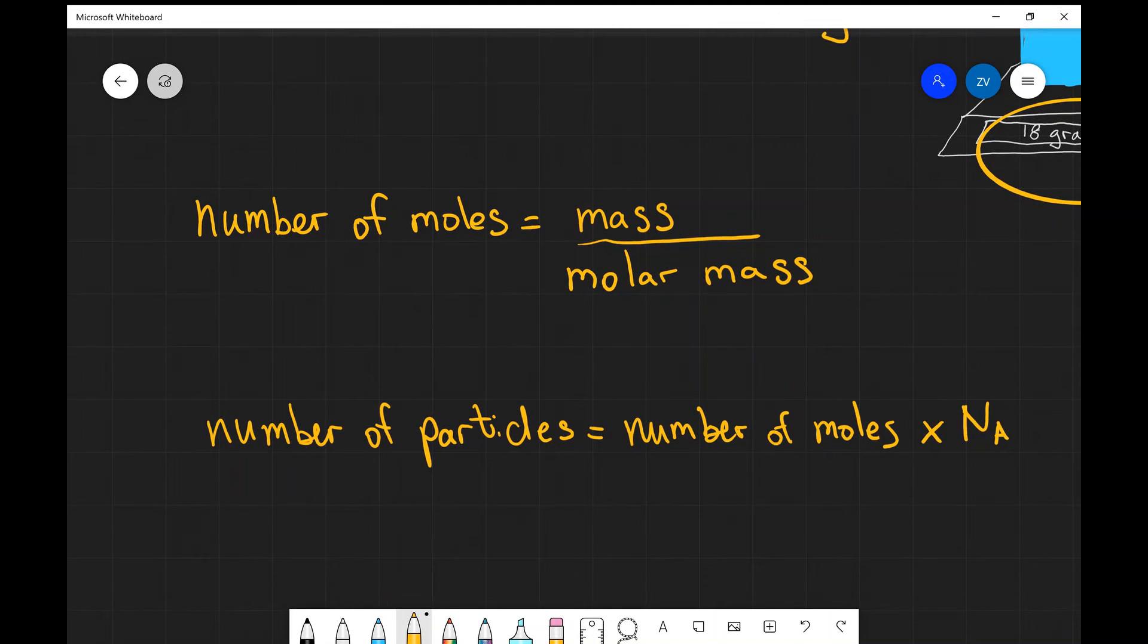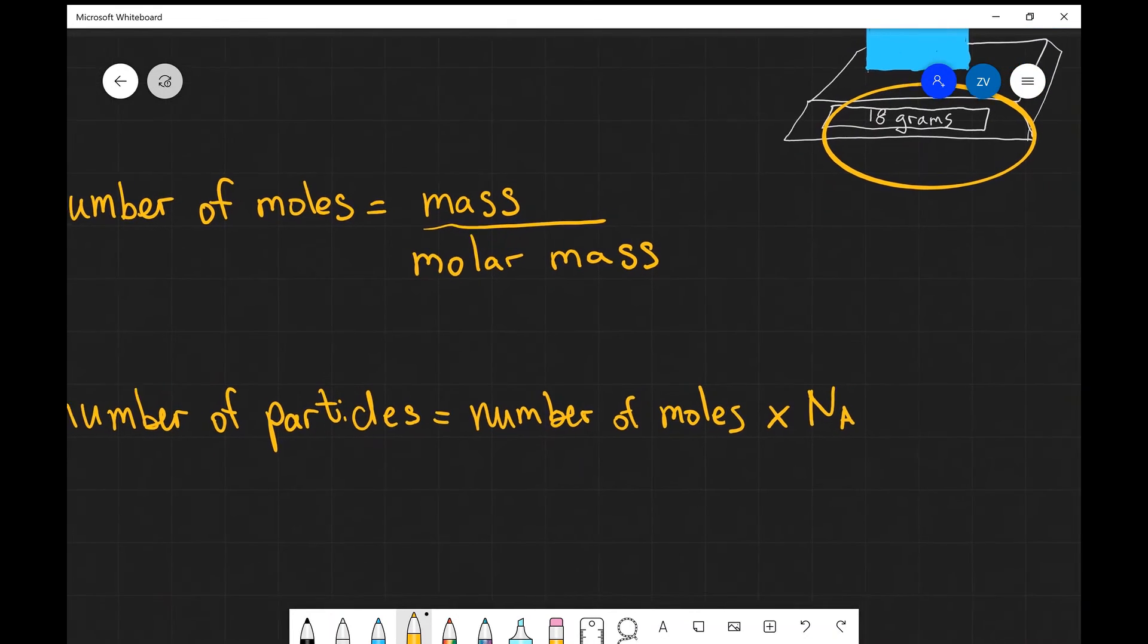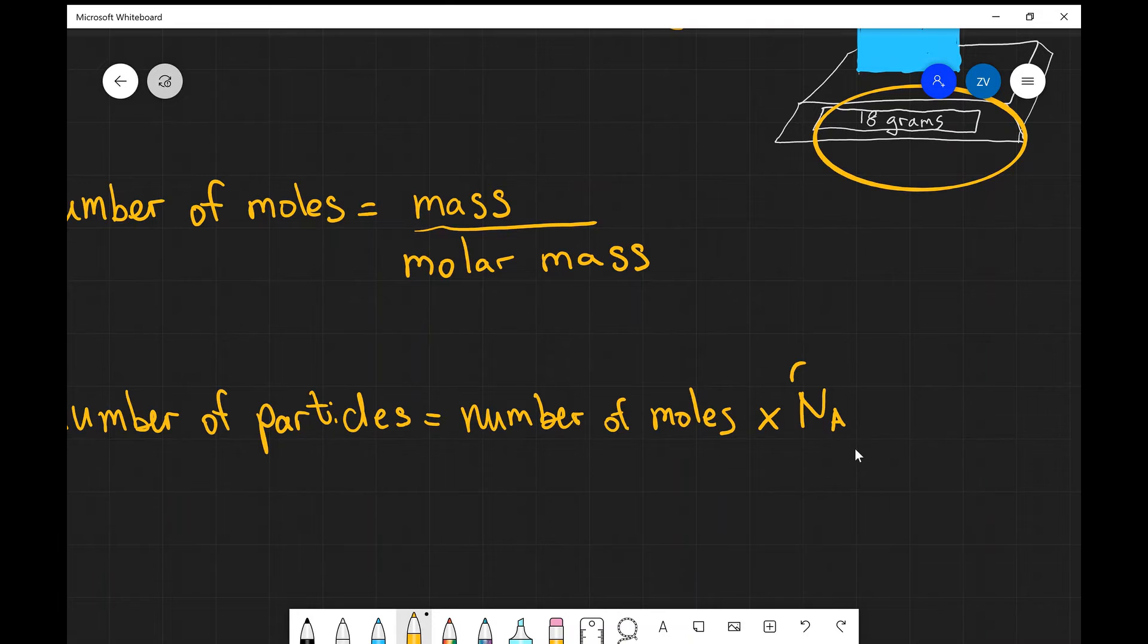Once you have your number of moles, all you need to do is multiply by Avogadro's constant, and this is a really useful number to remember. It's also given in your exam booklet, but this is equal to 6.02 times 10 to the power of 23.